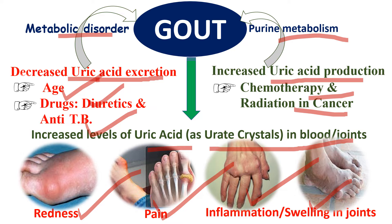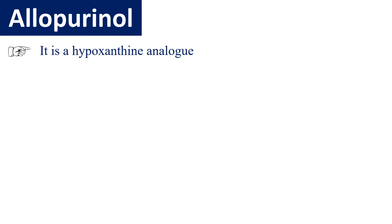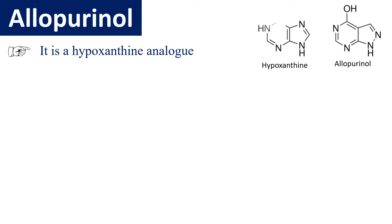Overall, in gout there is an increased level of uric acid in blood. Allopurinol is a drug used for treatment of gout. It is a hypoxanthine analog, and by comparing the structures of allopurinol and hypoxanthine, it can be easily seen that allopurinol is a hypoxanthine analog.